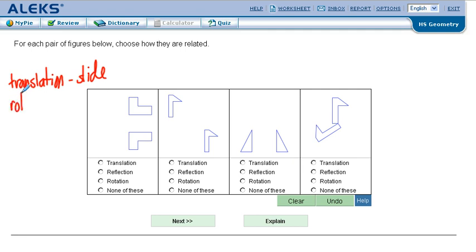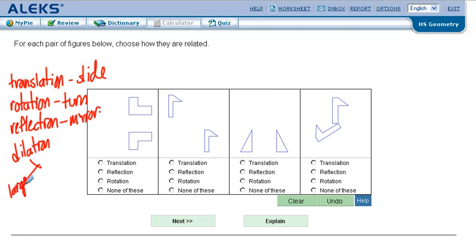And then you have rotation. Rotation is like a turn, like you're turning a knob, and then you have reflection, like a mirror image. The last one is dilation, which means to take the same shape and to either make it larger or smaller.